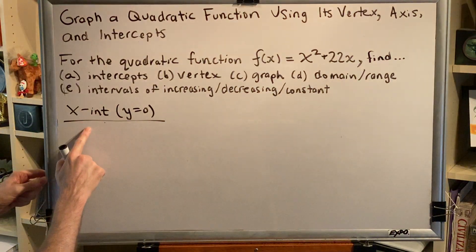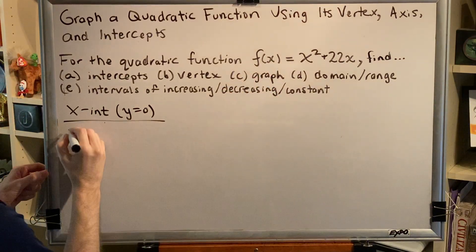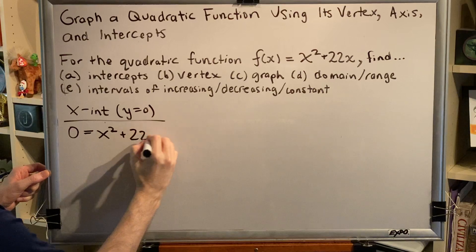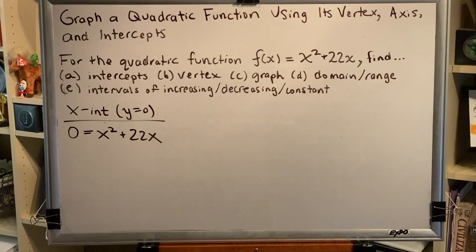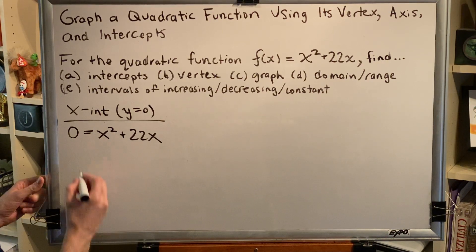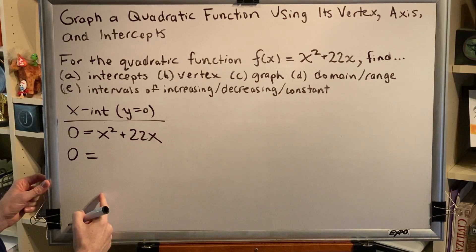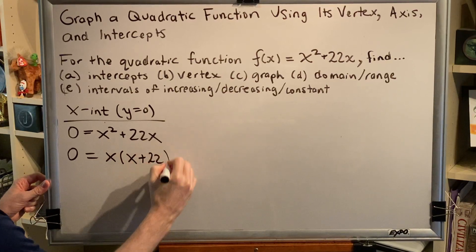So let's look for x-intercepts. We replace y with zero, so we replace this f(x) with zero, and we get 0 = x² + 22x. This is a quadratic equation. We can solve it in multiple ways, but the easiest way is factoring followed by the zero product property. The GCF, the greatest common factor of this binomial, is x. And when we take out the x, we're left with x + 22.